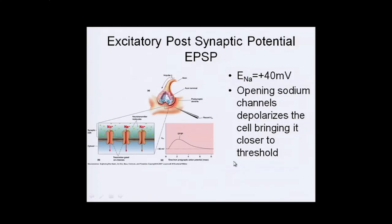Back to the excitatory post-synaptic potential. It doesn't have to be from an electrical gap junction — it's any potential that is generated that helps excite the cell. It's not that big of an amplitude. This could result from not only electrical synapses, but anything that makes a sodium channel open. Sodium flows into the cell, depolarizing it a little bit, and you get this EPSP. It may not bring it to threshold, but it brings it closer to threshold.